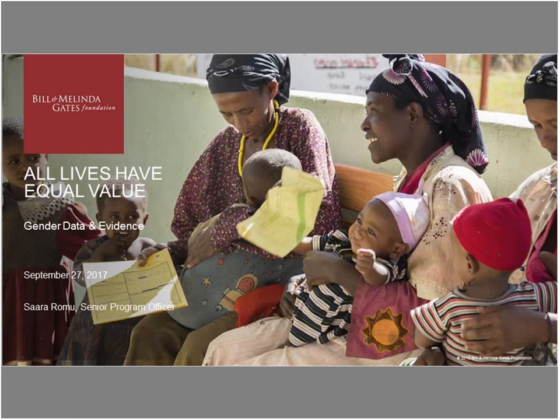Sarah Romo: I'm a senior program officer at the Gates Foundation focused on gender data and evidence, and I work across the organization with multiple programs. A little about our organization: we usually have just under 3,000 active grants, and we give about $4 billion on an annual basis. We have offices around the world, headquartered in Seattle, but also in D.C., London, Delhi, Beijing, and some smaller offices in Africa as well.